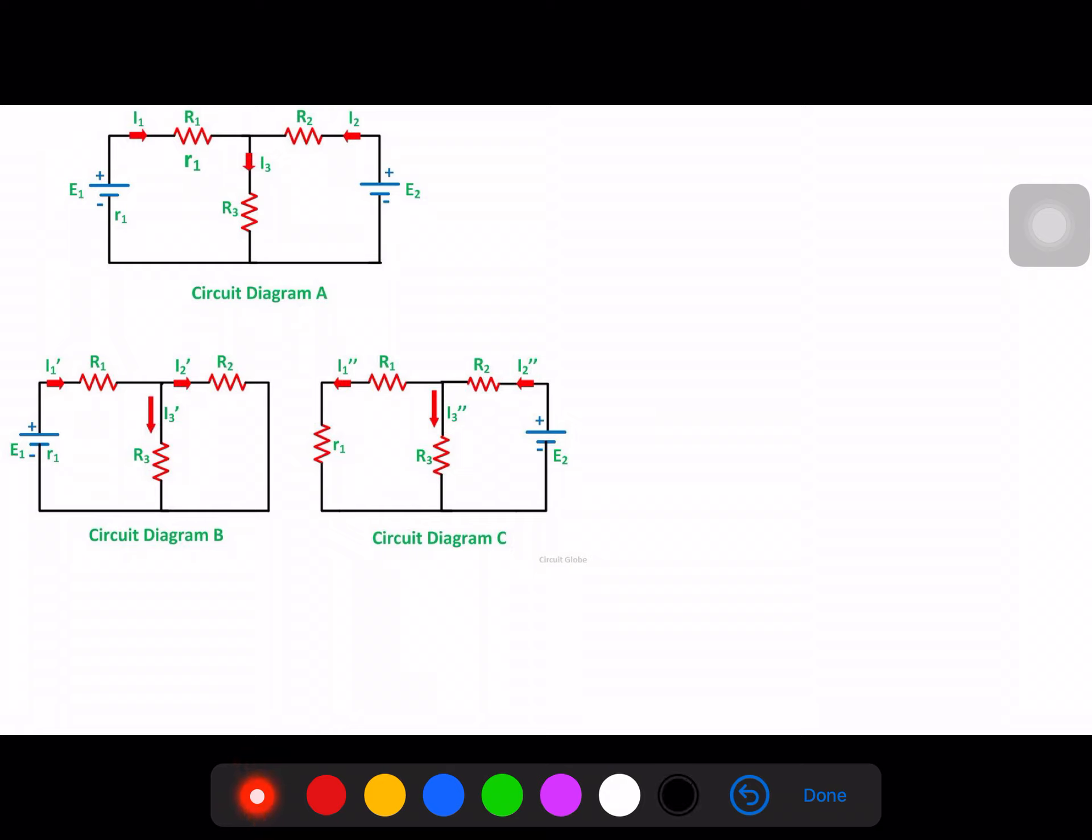So final current, as you see that we have received these responses, I3' in this circuit and I3'' in this circuit. I3' is due to E1 only, I3'' is due to E2 only. So finally my current I3 which I was supposed to find, this main current, it will be equal to the sum of responses due to E1 that is I3' and due to E2 that is I3''. So this will be my current equation and this is how you find your current or any parameter using superposition theorem.